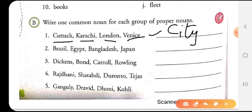Next is Brazil, Egypt, Bangladesh, Japan. So these are names of country. So it is country, C-O-U-N-T-R-Y country.